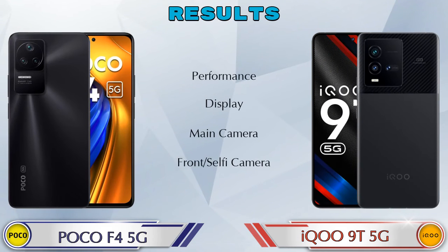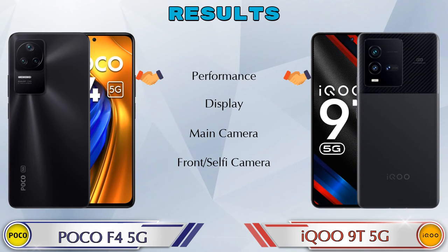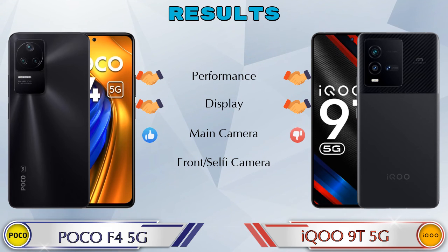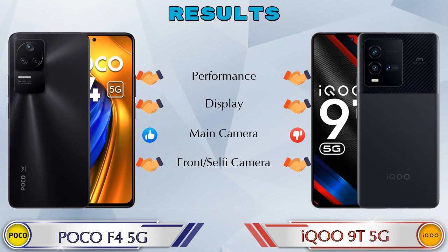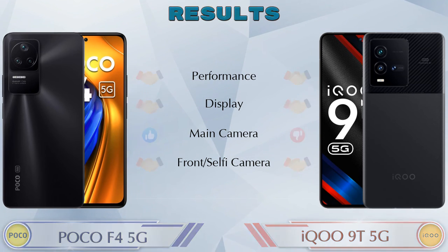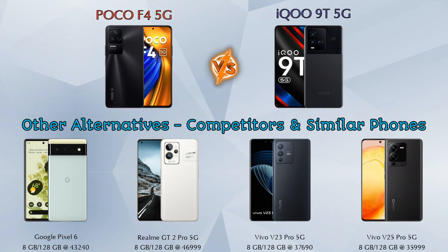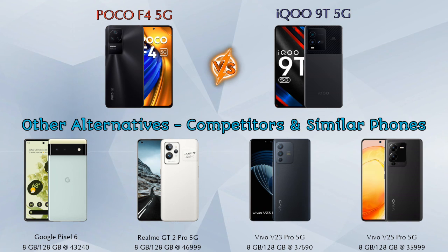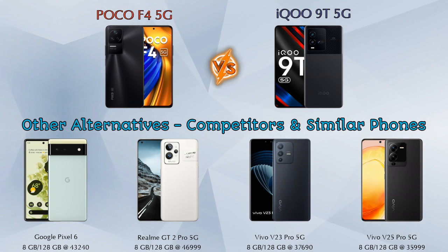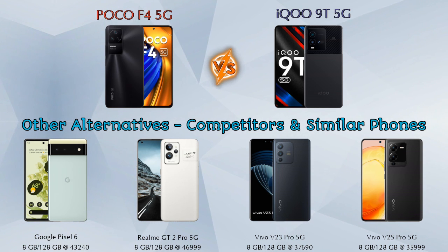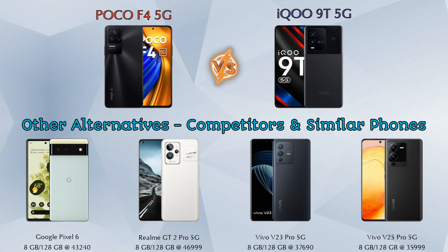Finally, talking about the results: in performance both phones are the same; in display both phones are the same; in main camera the F4 5G is ahead; in front selfie camera both phones are the same. For other competitors at the same price, consider: Google Pixel 6 5G, Realme GT2 Pro 5G, Vivo V23 Pro 5G, and Vivo V25 Pro 5G. Details about all these competitor phones are available in the description.